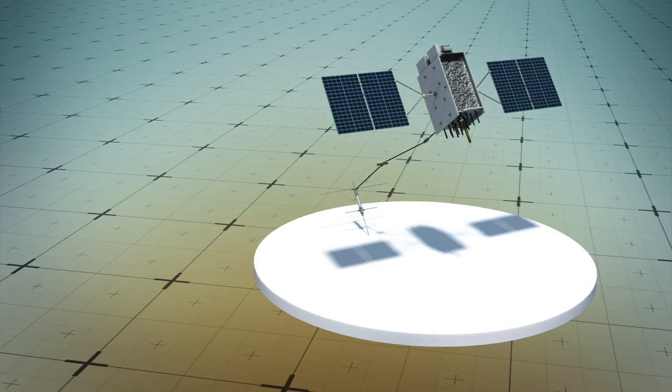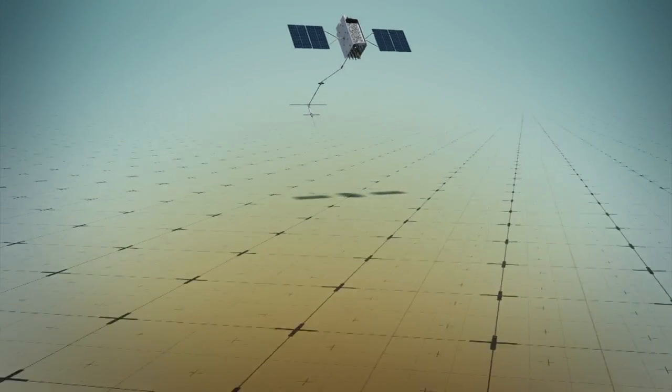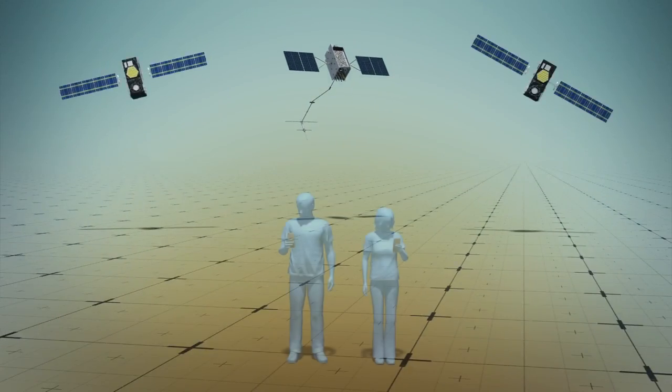GPS-3 satellites have an improved accuracy of 1 to 3 meters under good conditions, three times more accurate than current GPS systems. The satellite is also proven to be compatible with existing GPS constellations.